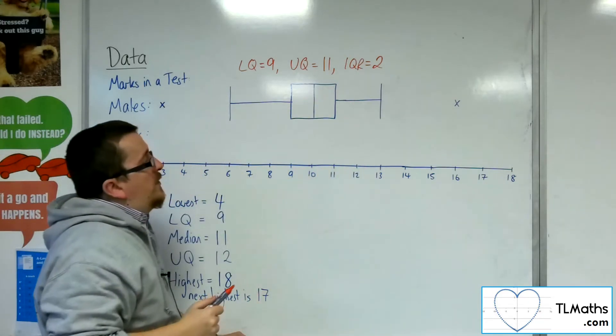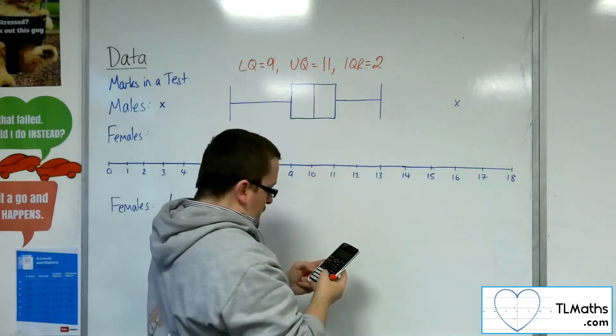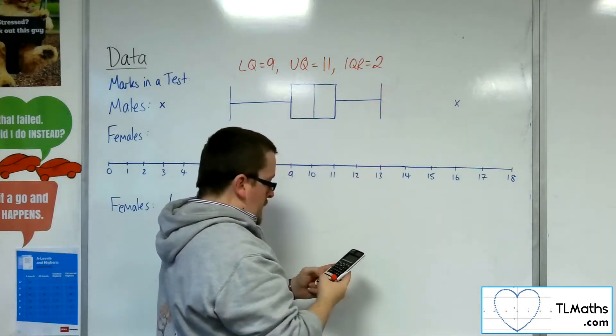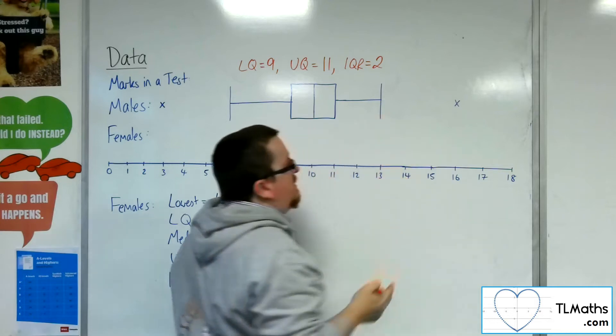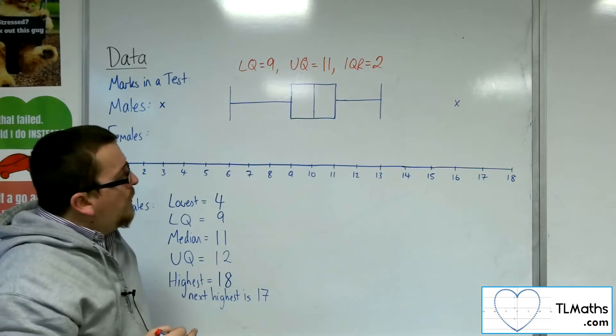Let's have a look at this other end. So that would be the upper quartile, 11, plus 1.5 times the interquartile range. And that's at 14, not 13. So what's going on?